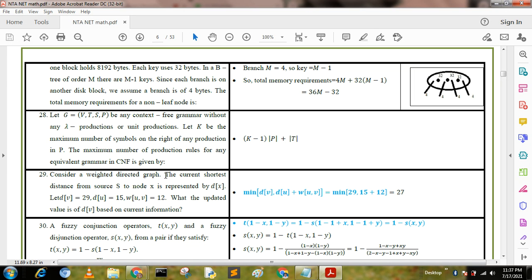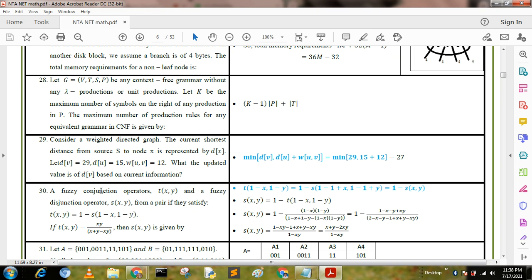Consider a weighted directed graph. The current shortest distance from source to node x is represented by d(x). Let d(v) = 29, d(e) = 15, w = 12. What is the updated value of d(v) based on current information? Using this formula, we can find the minimum value: min(d(v), d(u) + w(u,v)) = min(29, 15 + 12) = 27. So 27 is the answer.